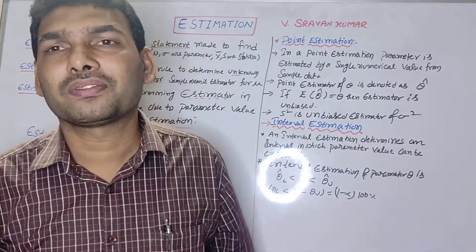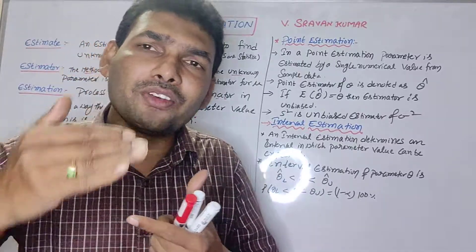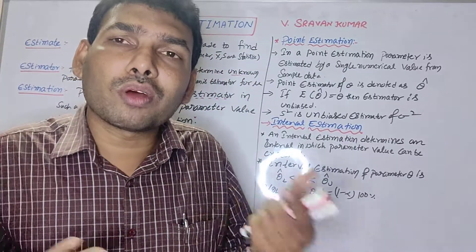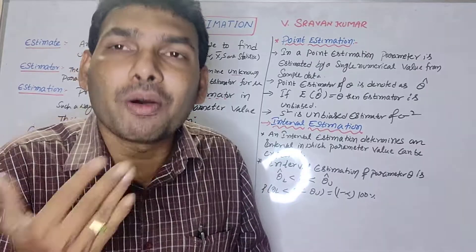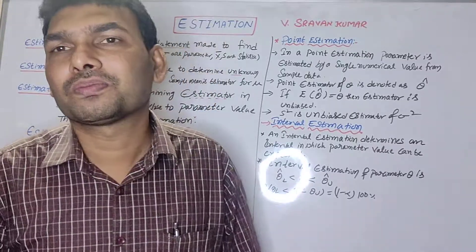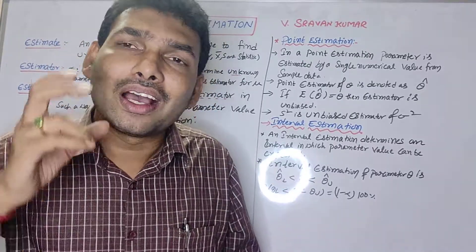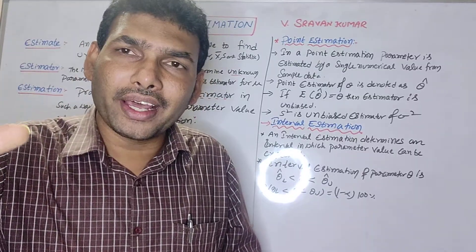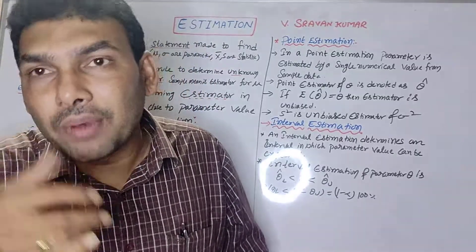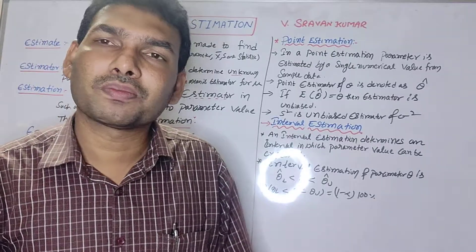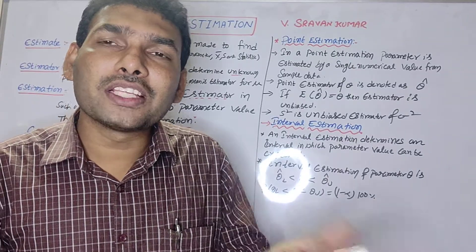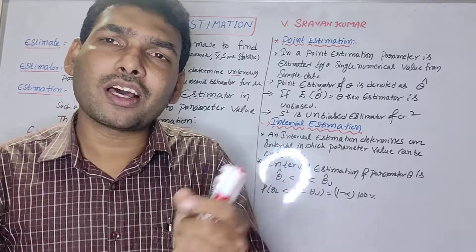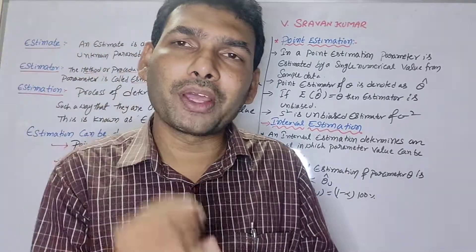When you guess, there will be some error, and the guess may change from the actual value. The maximum error E-max can be calculated. We can calculate the confidence interval for unknown parameters like mu and sigma using some formulas.